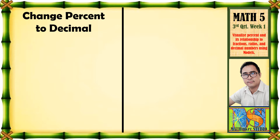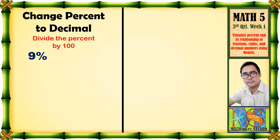Paano ba natin gagawing decimal number ang percent? Simple. Ang gagawin lang natin ay divide the percent by 100. Example: 9 percent, change to decimal number. Ganito ang gagawin natin — let us divide by 100.